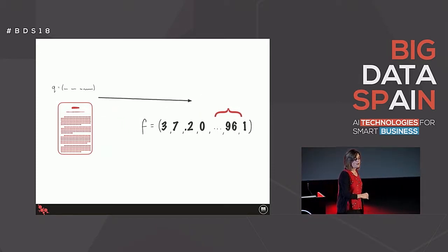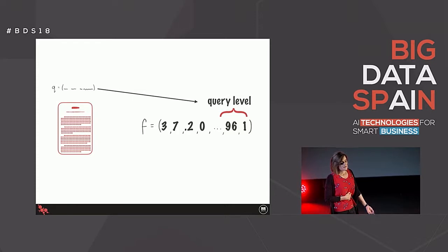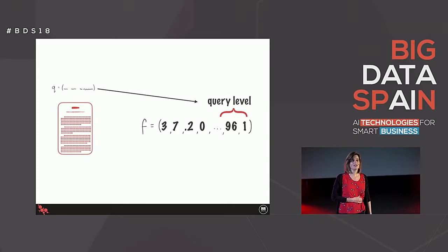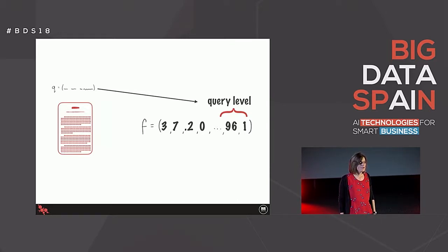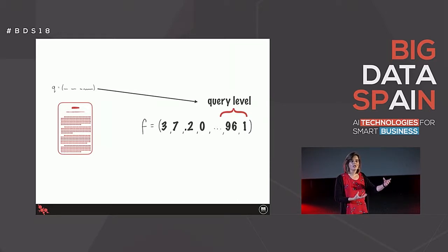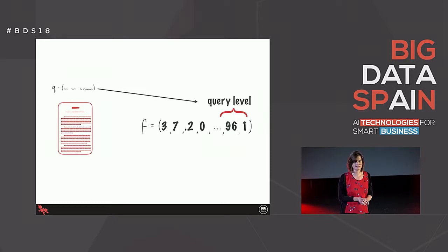And the last set of features just depend on the query - things like how long is the query, how many letters, how many words. So you can see that for any query-document pair, we can generate a feature vector quite easily.